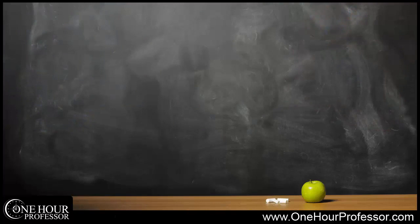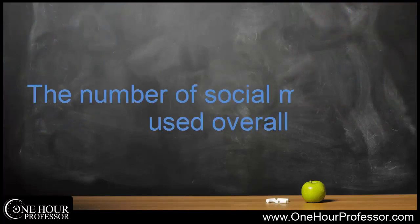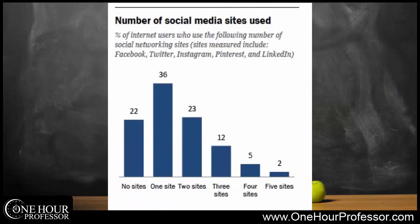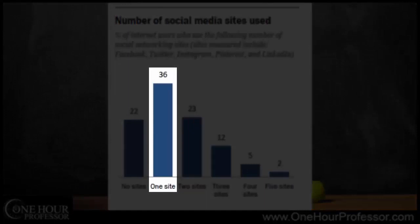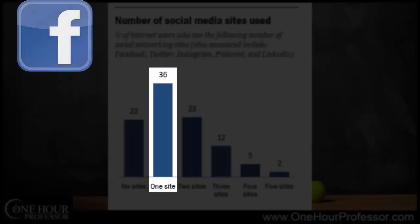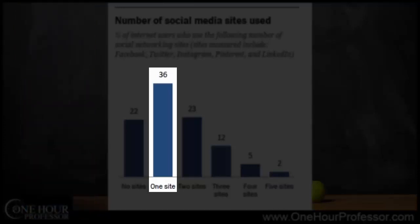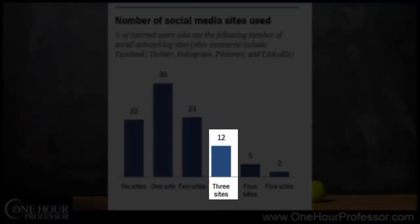The next part of the study looked at the number of social media sites used overall. Some people wonder how accurate the information is since people use different sites. The study breaks this down well: 36% of survey participants said they only use one site, which might be surprising. Personally I'm active on three sites — Facebook, Twitter, and LinkedIn — but a lot of people are not. So usage is overrepresented by one site, with some people on two, three, four, or five sites.